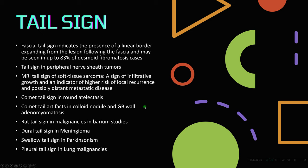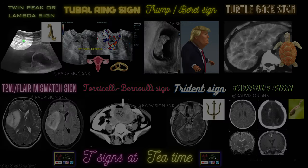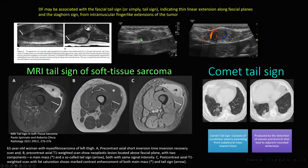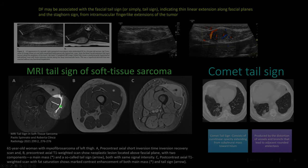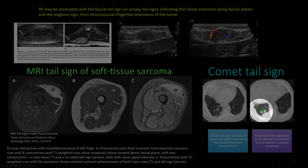Next, different tail signs to remember: the fascial tail sign and MR tail sign. The fascial tail sign shows a small linear tail-like extension along the fascia in desmoid fibromatosis. Also remember the staghorn sign in desmoid. The MR tail sign is seen in soft tissue sarcoma — an enhancing mass with a tail-like extension. Finally, the comet tail sign is classically seen in round atelectasis.